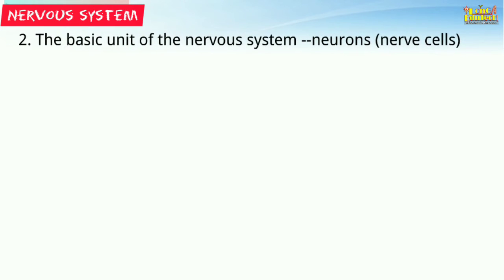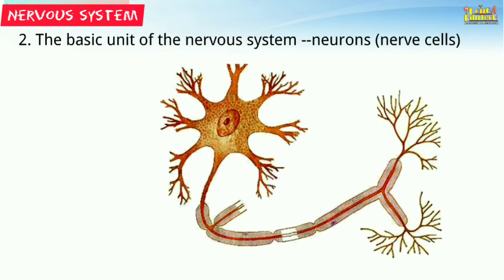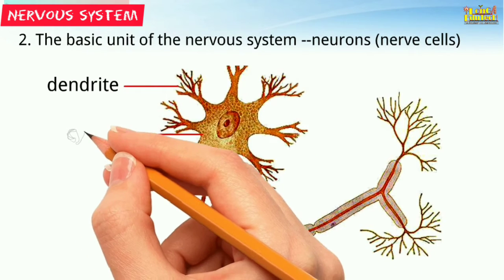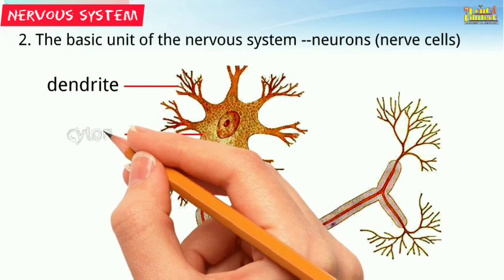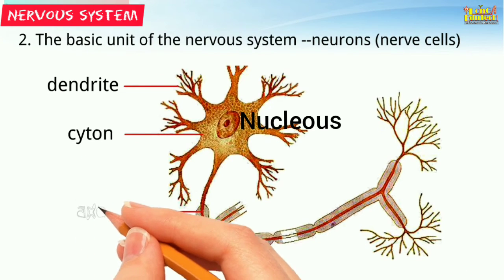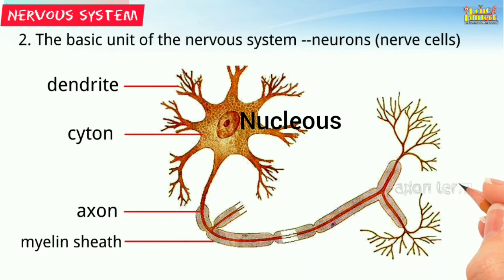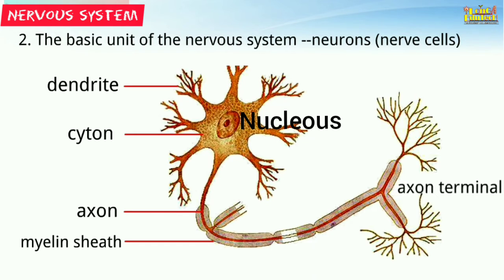The basic unit of the nervous system is the neuron, or nerve cell. It consists of dendrites, cytone, nucleus, axon, myelin sheath, and axon terminals. The dendrites of the nerve cell receive information — the stimulus — from the surrounding environment through our sense organs.